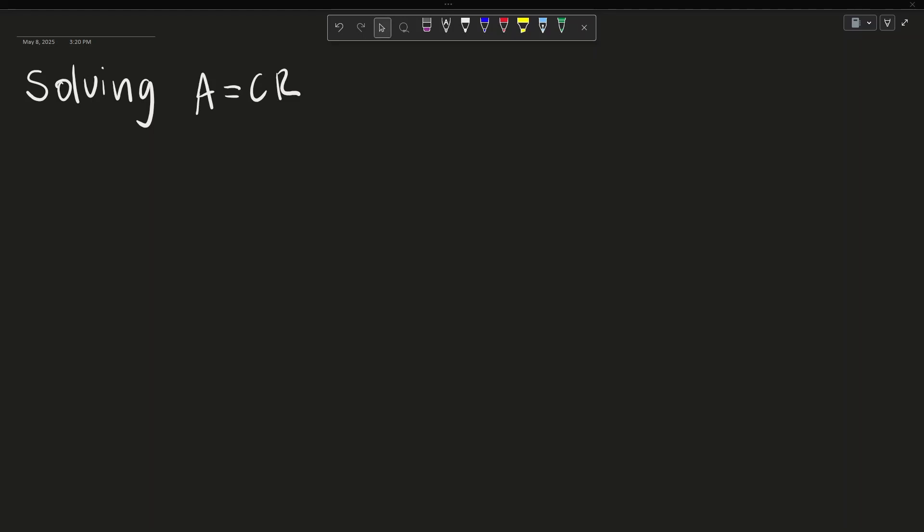In order to solve the A equals CR system, you must first understand how to reduce a matrix A into its row echelon form or reduced row echelon form.